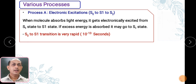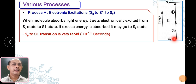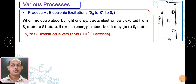The first step, Process A, is electronic excitation from S0 to S1, or from S1 to S2. An electron in the ground state receives light energy and gets excited to S1 — the first singlet excited state. If it receives excess energy, it gets excited further from S1 to S2. This process is very fast, taking place in a time of around 10⁻¹³ seconds.